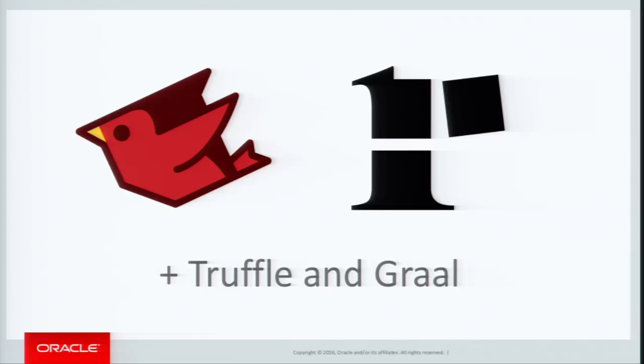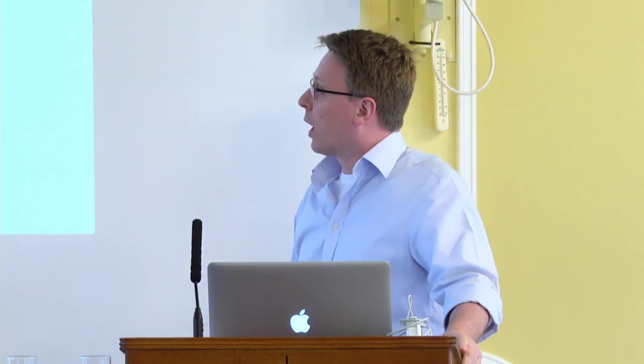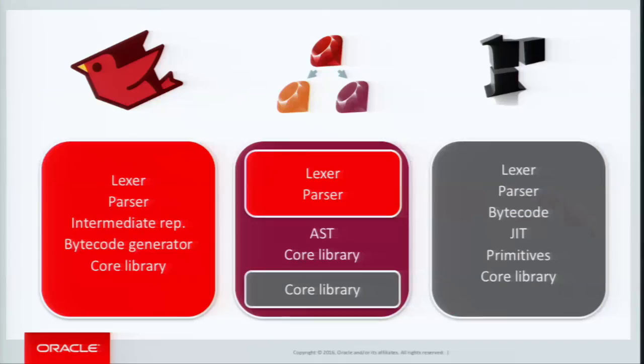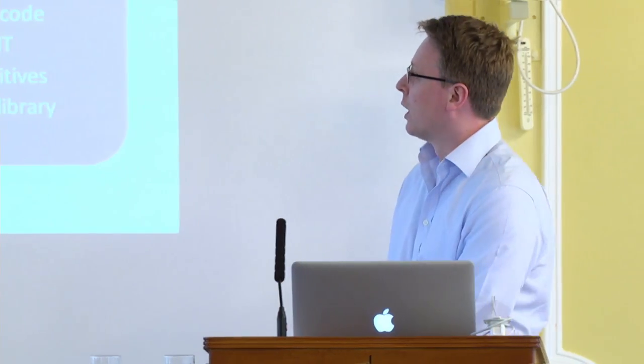Both JRuby and Rubinius are actually used in production — they're not just toy implementations. My implementation is called JRuby plus Truffle. It's an interesting story: both JRuby and Rubinius had to implement almost everything from scratch — their own lexer, parser, bytecode, JIT, core library. This is why writing VMs is difficult and takes so long. We took the lexer and parser from JRuby, wrote our own AST using Truffle, and took some core library from Rubinius.